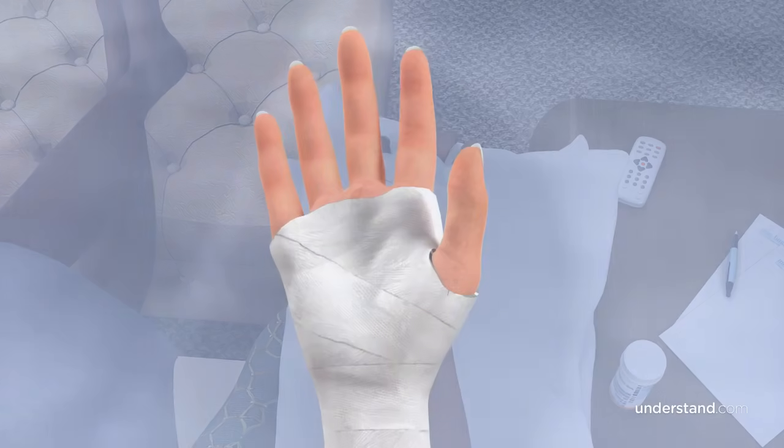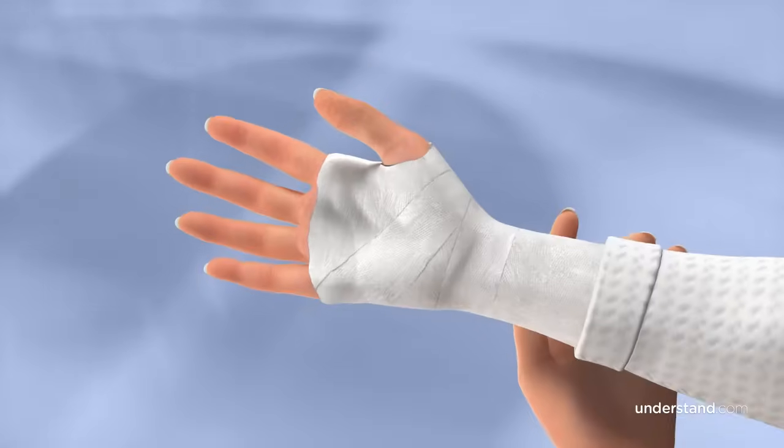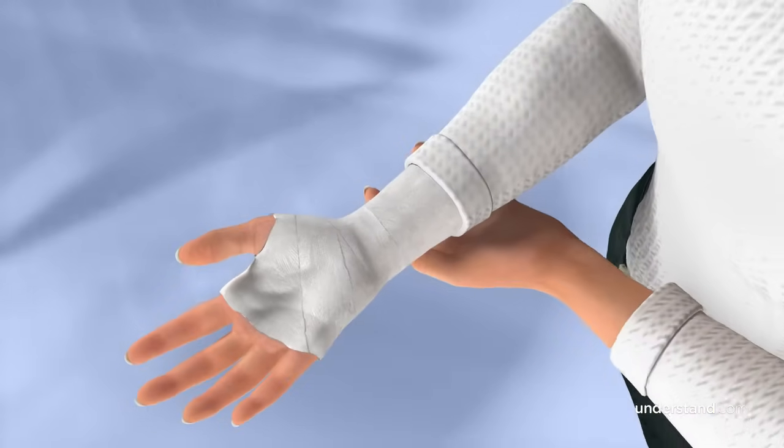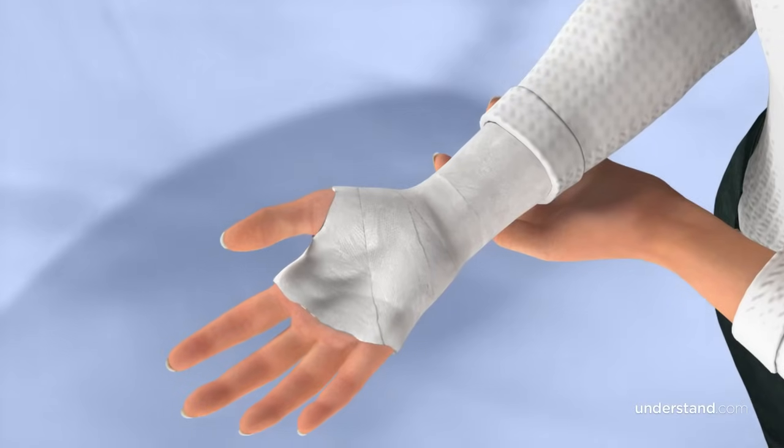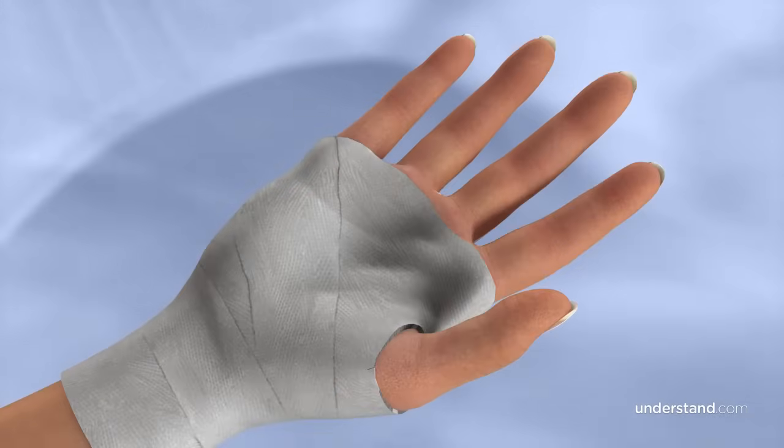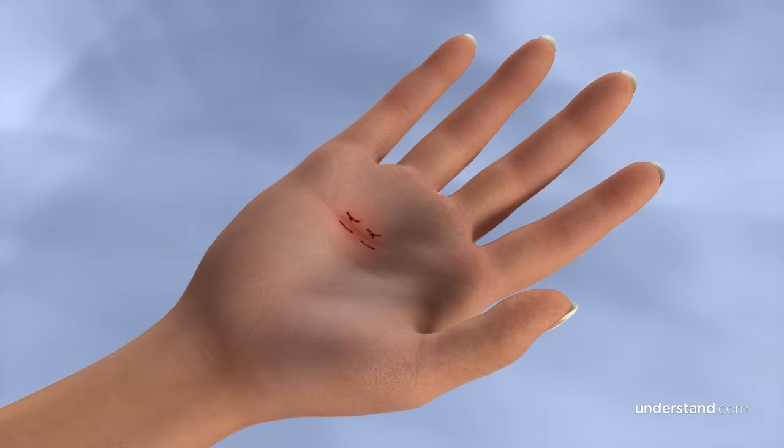You will likely be asked to keep the area clean and dry, and to keep your hand elevated as much as possible for several days to minimize swelling. Bandages are generally removed after a few days, and sutures are removed in one to two weeks based on healing. The incision will likely be pink or reddish in color as the tissues heal. It may also feel tender and firm for a few months after surgery.